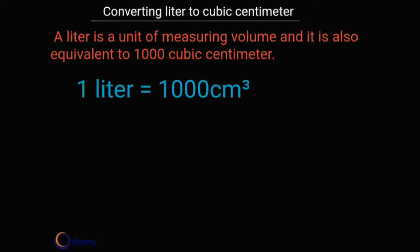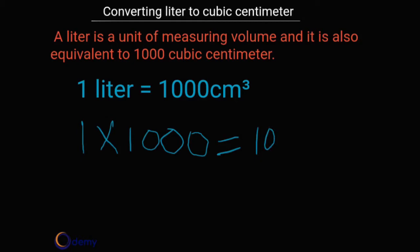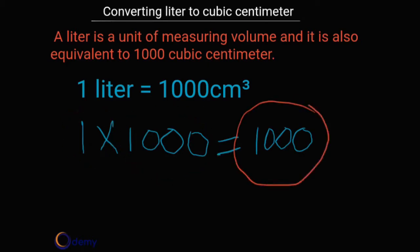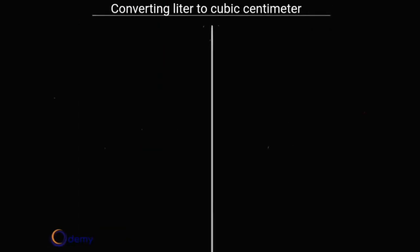If I was just given one liter, to convert it I take one liter multiplied by 1000. One multiplied by 1000 equals 1000. So to convert liters to centimeter cubed, multiply the value of the liters by 1000 to give the value in centimeter cubed. Let's look at some examples.